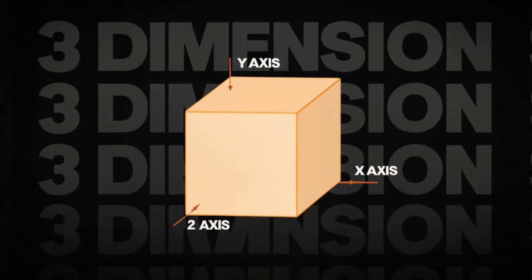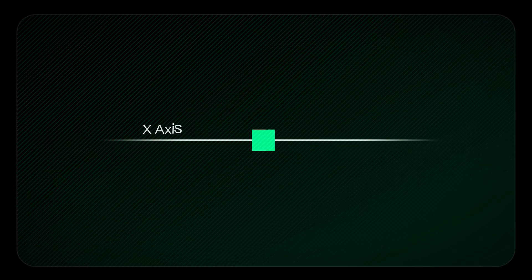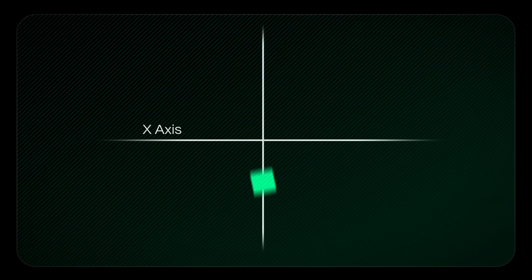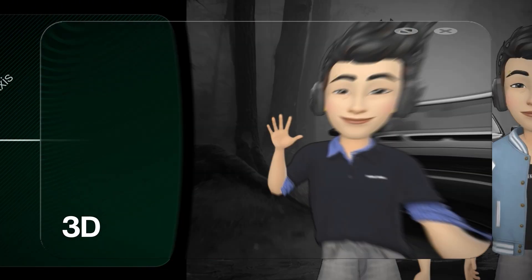You can also create 3D effects using a null object along with the camera. But before we dive into that, let's talk about the three-dimension system. Moving an object left or right is called the X axis. Moving an object up or down is called the Y axis. Moving an object forward and backward is called the Z axis, and this is what creates the sense of depth in 3D.